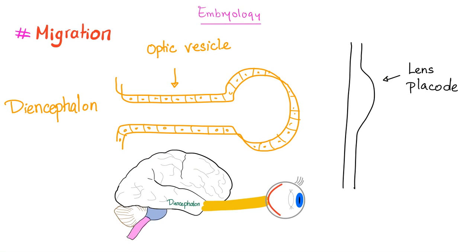Here is an additional example of cell migration: look at your eye. How did your eye form? Basically it's an outward bulging of the brain, called the optic vesicle. And then the optic vesicle will meet the lens placode, giving you your beautiful eye.